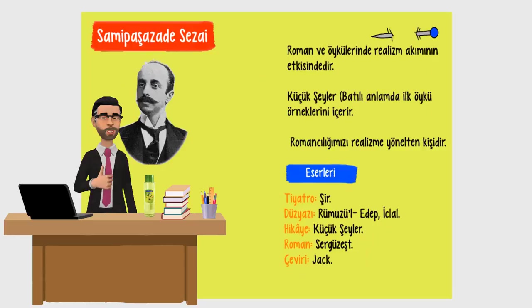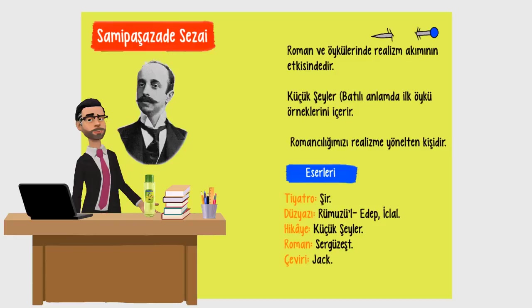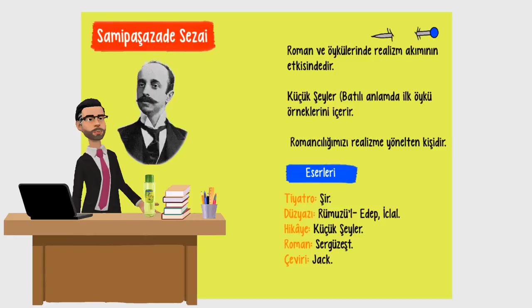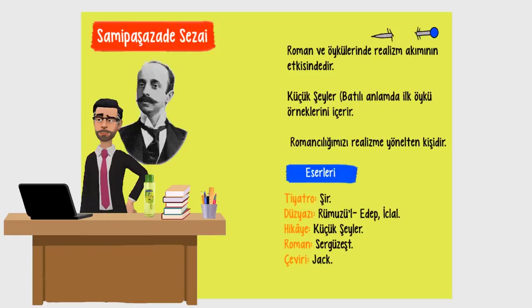Sıradaki yazarımız Sami Paşazade Sezai. Roman ve öykülerinde realizm akımının etkisindedir. Küçük Şeyler, batılı anlamda ilk öykü örneklerini içerir. Romancılığımızı realizme yönelten kişidir. Eserleri — Tiyatro, Şiir, Düz Yazı: Rumuzul Edep, İclal. Hikaye: Küçük Şeyler. Roman: Sergüzeşt. Çeviri: Jacques.